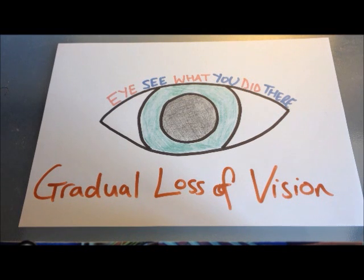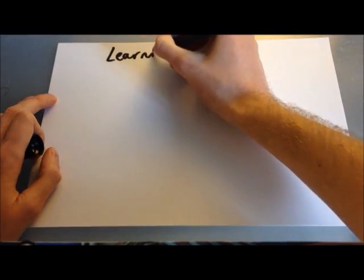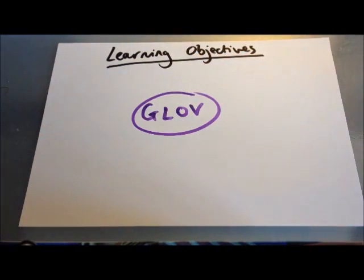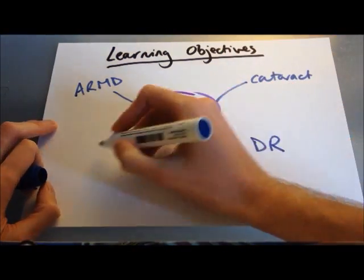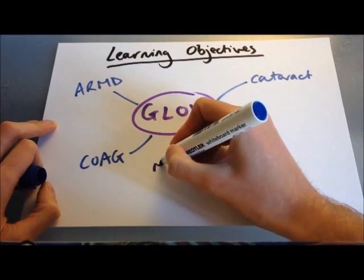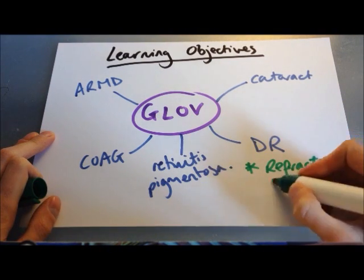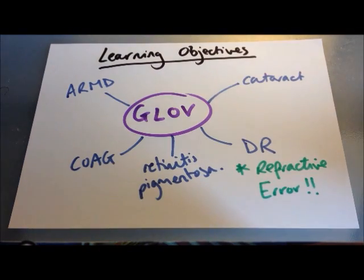Hello, welcome to this teach which is going to be on the differential diagnoses for a patient presenting with gradual loss of vision. In this video we'll be looking at the important differentials for a medical student to be aware of for patients presenting with gradual loss of vision. We won't cover it in this teach, but remember it's always important to rule out refractive error causing a loss of a patient's vision.